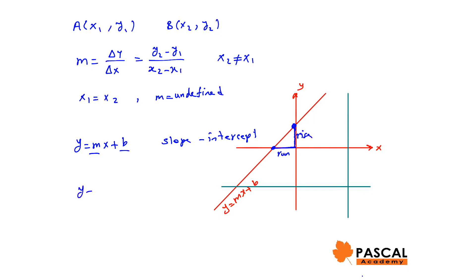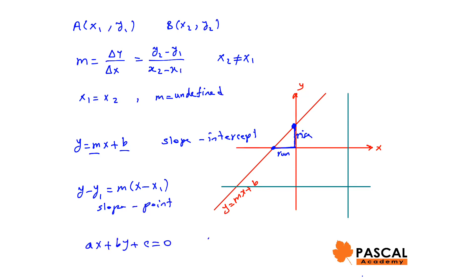y minus y1 equals m times (x minus x1) is the slope-point equation of a line, and ax plus by plus c equals 0 is the standard form of the equation of a line. a, b, and c are integers, and a is positive in standard form.